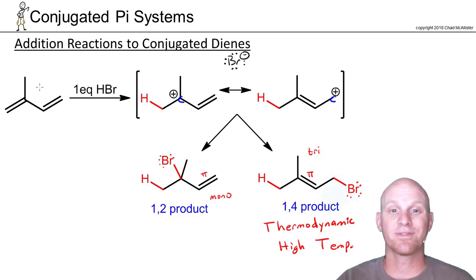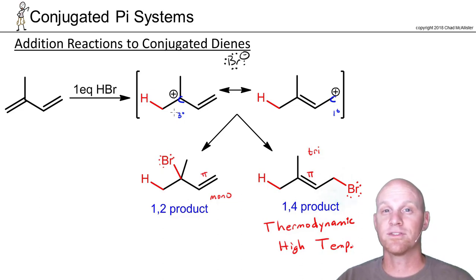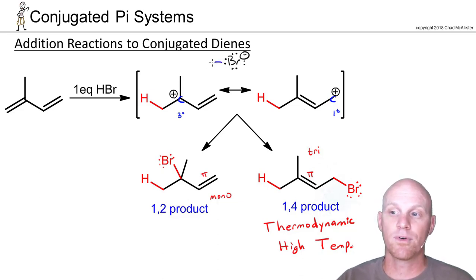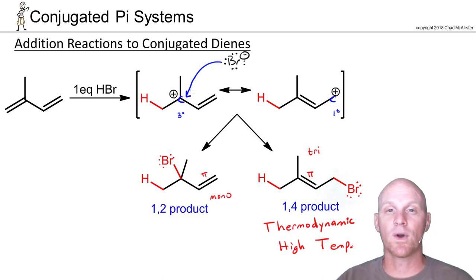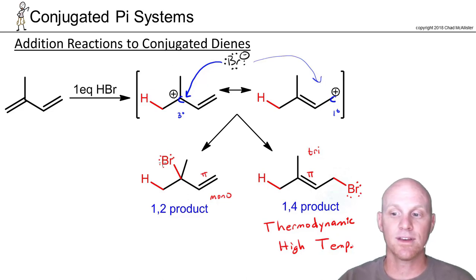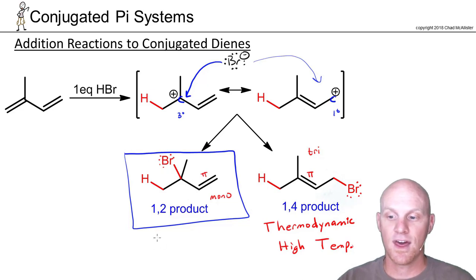Between the two resonance structures, the one where the positive charge is shared between a tertiary and a primary carbon is the more stable resonance contributor. Therefore the resonance hybrid resembles it more, meaning the partial positive charge on the tertiary carbon is greater than on the primary carbon. Bromine attacking the tertiary carbon has lower activation energy, so wherever that attack leads is the kinetic product.